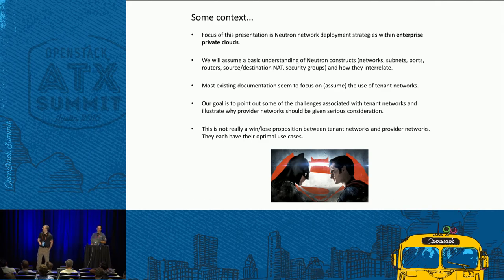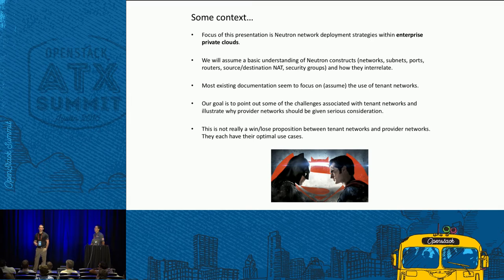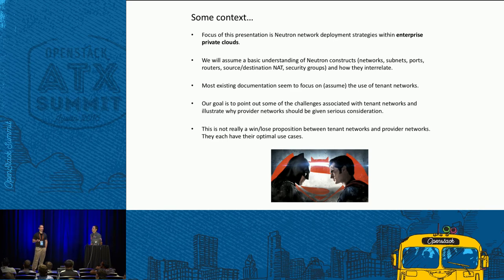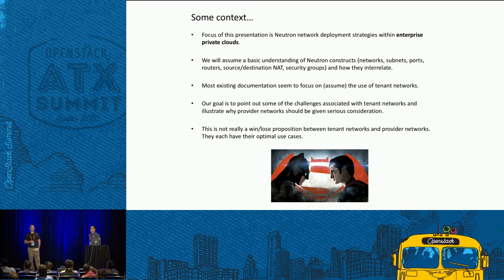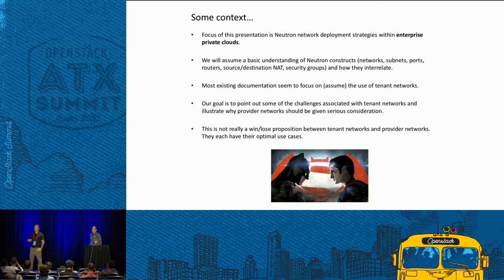We're specifically going to focus on enterprise private clouds in this presentation, and we'll assume a basic understanding of neutron network concepts like ports, subnets, networks, and how those things interrelate. As I've read a lot of the OpenStack networking-related information out there, it's really hard not to conclude that tenant networks are a foregone conclusion — that you should be using tenant networks and that's really the way to go. What we're going to present is maybe a little bit of a contrarian view on that.